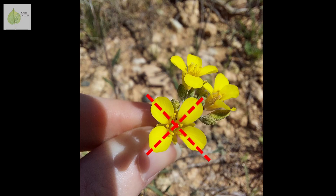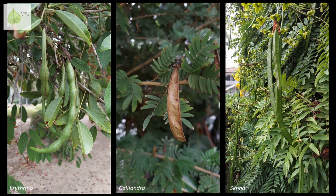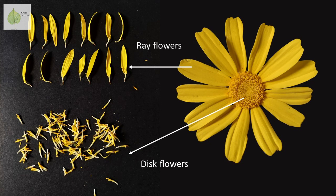Every time I teach you about a new plant family, I emphasize the significance of remembering the characters and patterns of that particular family in order to easily recognize any of its members — whether it's the cross-shaped flowers of Brassicaceae, Fabaceae and their typical legume fruits, or the flower heads of Asteraceae. Today, I'm going to talk about Poaceae, simply known as grasses.